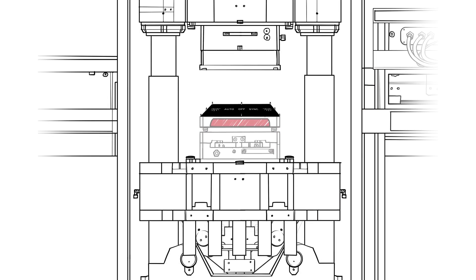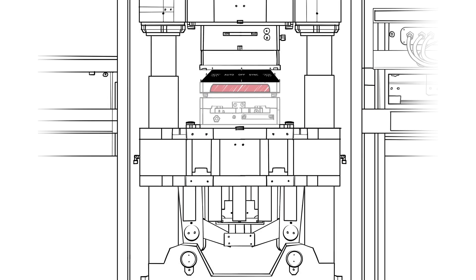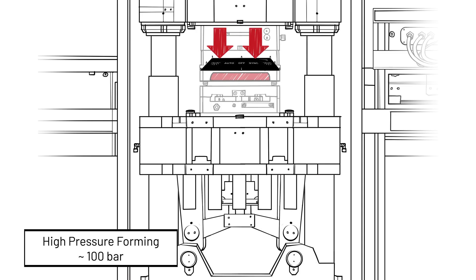Toggle lever mechanism is closing the forming station and clamps the film in between. Heated high-pressure air is forming the film precisely over a heated forming core.